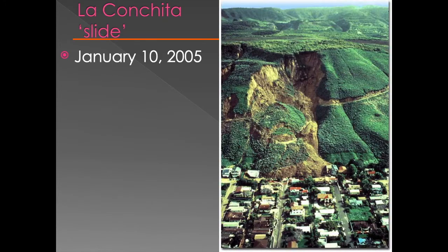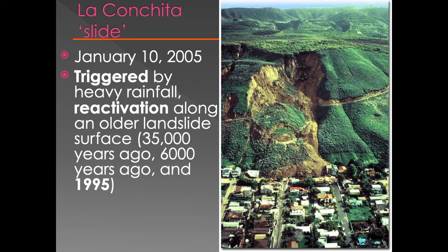Here we see an example of what happened in 2005, where it was triggered by heavy rainfall. The slope became supersaturated and then moved down the slope. When we look at the slope, we can see that there were different periods of time where slumping occurred and the slopes got weakened. These happened on three occasions: 35,000 years ago, 6,000 years ago, in 1995, and then again in 2005.